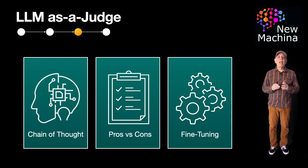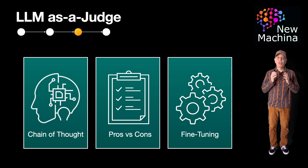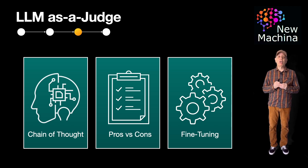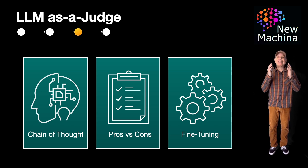So does LLM as a judge really matter? Yes. LLM as a judge helps scale evaluations for production-grade LLM-driven systems. It's fast, cheap, and great for continuous feedback loops. LLMs judging LLMs is the key to safer, faster, and scalable deployments.